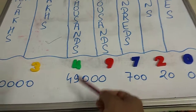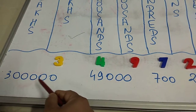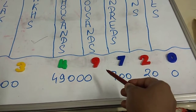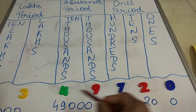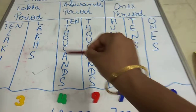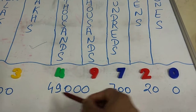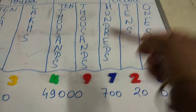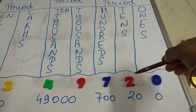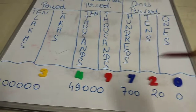Counting the zeros: one, two, three, four, five — so it is three lakh forty-nine thousand. We are reading the four and nine together because they are in the same period, that is the thousands period. So the number is three lakh forty-nine thousand seven hundred and twenty.